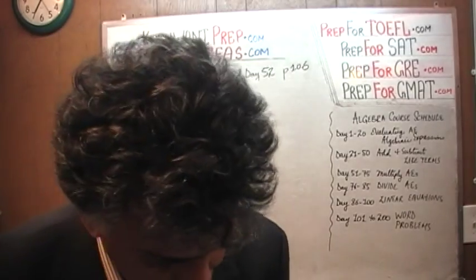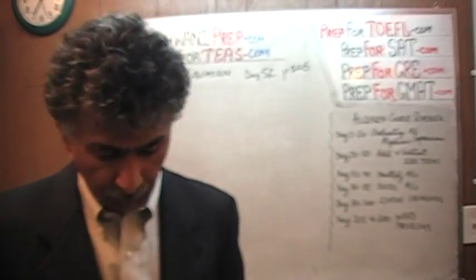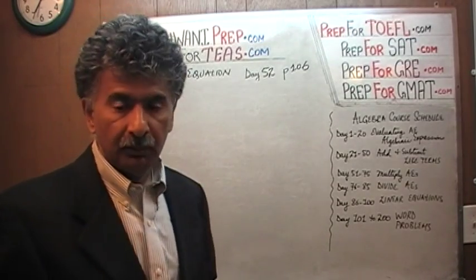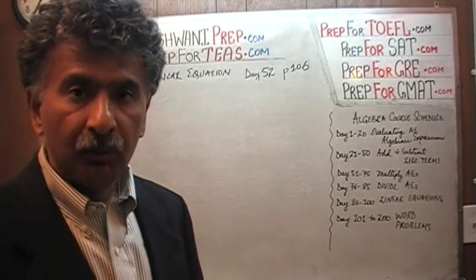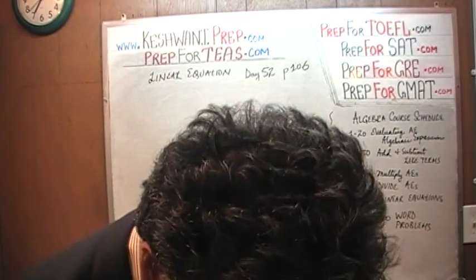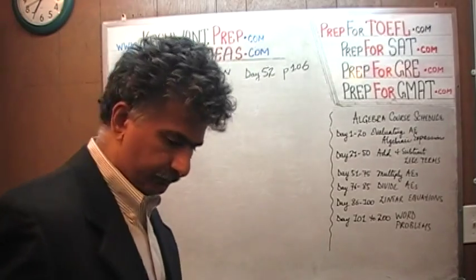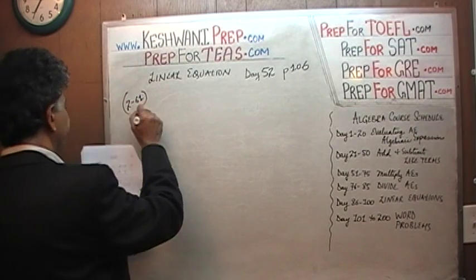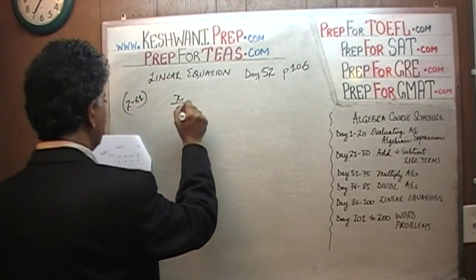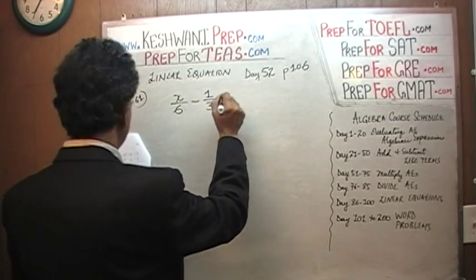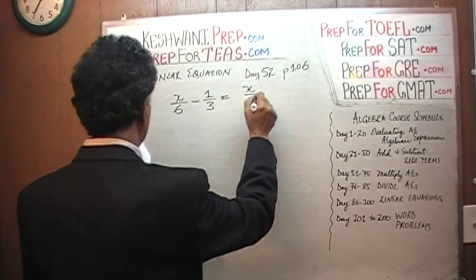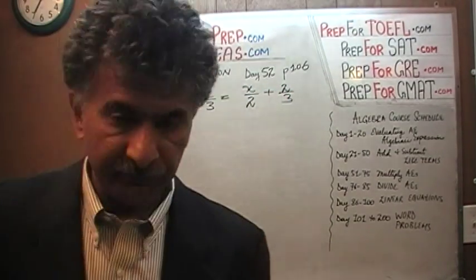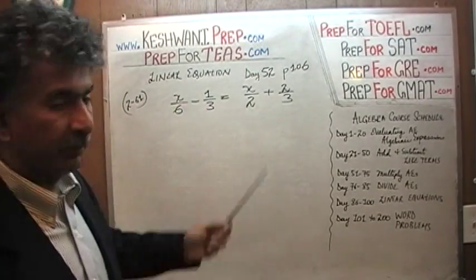The problem that we are about to solve is on page 106. Please turn to it. Today is our lesson number 52. Today we will solve this linear equation, problem 2.61. Let's take a look at it. It says x over 6 minus 1 third is equal to x over 2 plus 2 third. This is a simple linear equation because x is raised to the first power.